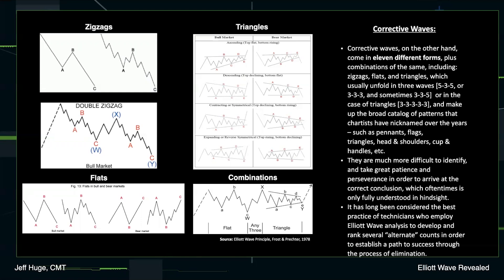Let's go through some of these corrective counts. A zigzag — the most common — is three waves, an A-B-C pattern, but with subdivisions. Since the pattern can unfold as a 5-3-5 typically, we'll see a motive wave defining that change in trend. In other words, if the advance is a motive wave, the correction will be led by a motive wave in the opposite direction, which will ultimately unfold as wave A of an A-B-C to complete that corrective pattern.